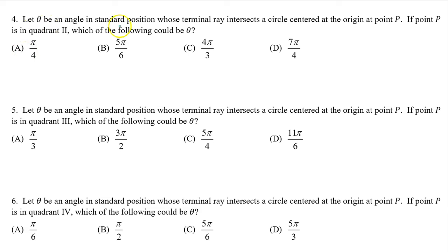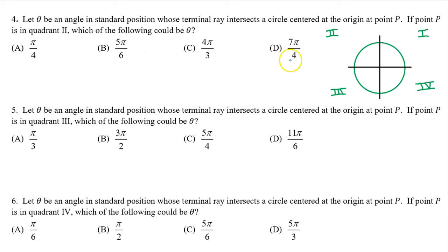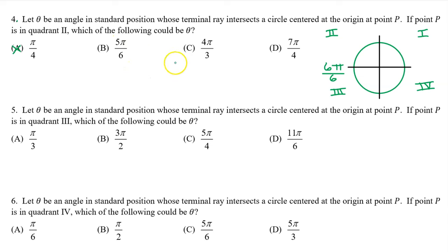Number 4. Let theta be an angle in standard position whose terminal ray intersects a circle centered at the origin at point P. If point P is in quadrant 2, which of the following could be theta? Pi over 4 is in the first quadrant, so A is out. Pi over 6 is in the first quadrant, but 5pi over 6 is a multiple of that. We know that pi is halfway around the circle. Since 5pi over 6 is a multiple of pi over 6, let's think of pi as 6pi over 6. Therefore 5pi over 6 will be one multiple before this, which does put it into the second quadrant. So the answer is B.